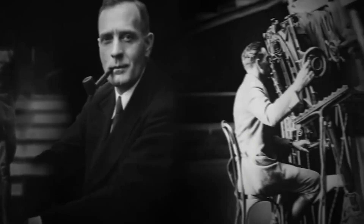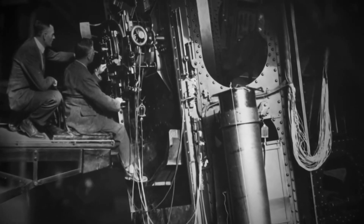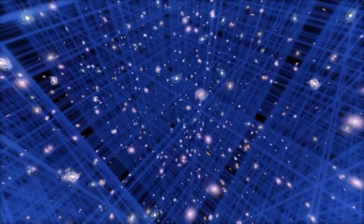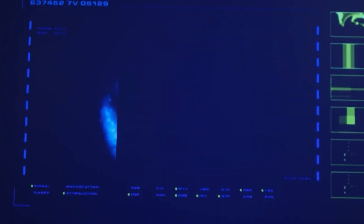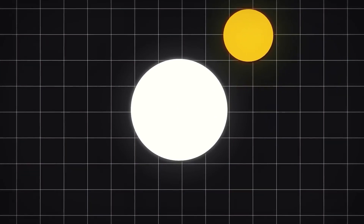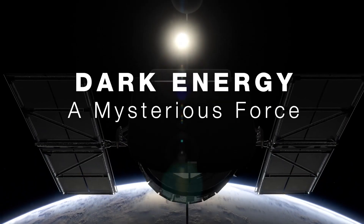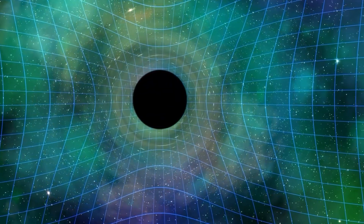Astronomer Edwin Hubble made a groundbreaking breakthrough about the universe in the 1920s. While utilizing a newly developed telescope at the Mount Wilson Observatory in Los Angeles, Hubble determined that the universe is expanding rather than remaining static. Years later, in 1998, the Hubble Space Telescope determined that the universe used to grow more slowly than it does now. Scientists were taken aback because it had long been expected that the universe's gravitational force would cause it to slow down or possibly stop expanding. The mysterious dark energy is said to be the strange force pushing the cosmos apart at breakneck speed.